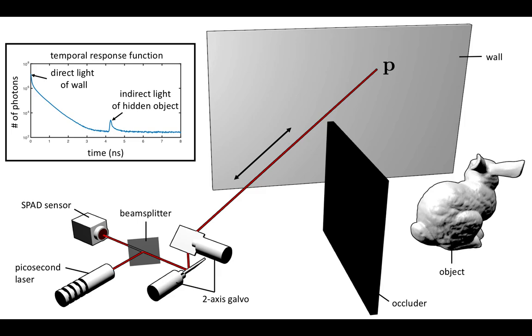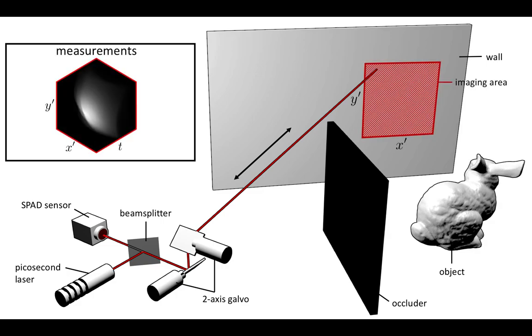The differences between the arrival times of these two impulses represent the distance of the object from point P. To recover an image of the object, the system repeats this procedure multiple times for every point on the wall and stores the measurements in a 3D spatiotemporal volume.